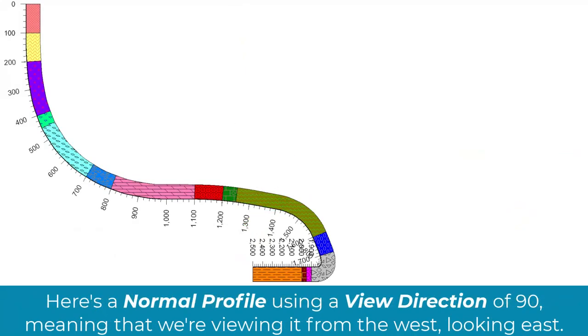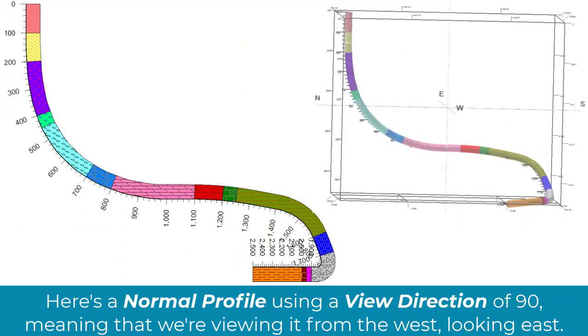Here's a normal profile using a view direction of 90, meaning that we're viewing it from the west looking east.